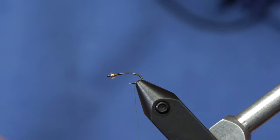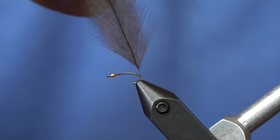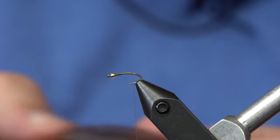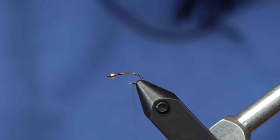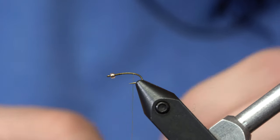But any of those hen saddle feathers like a Brahma or a 4B, any of those will work because I'm just going to pull off a few of those fibers and I'll use it for the tail and also the legs of this nymph.